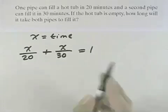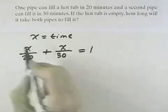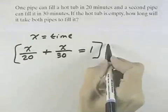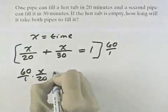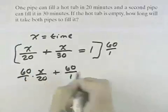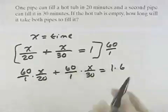What we're looking at here is to solve this equation. The common denominator would be 60, so what we can do is multiply our entire equation by 60 over 1. 60 over 1 times X over 20, this is going to allow us to get rid of our fractions. 60 over 1 times X over 30 equals 1 times 60.